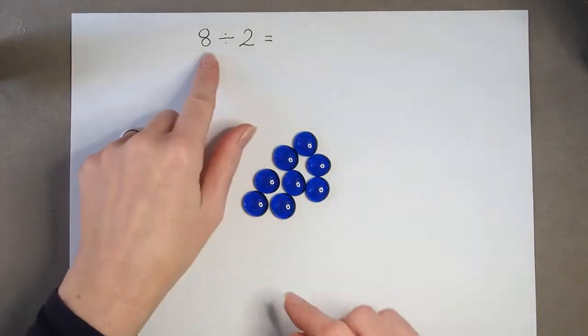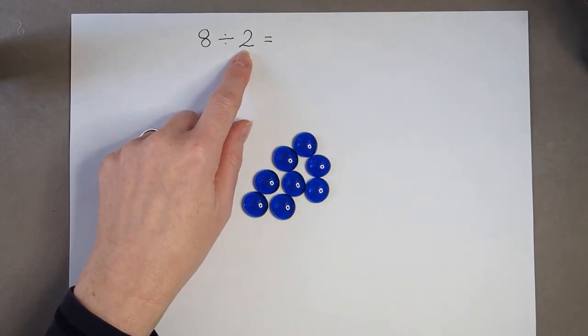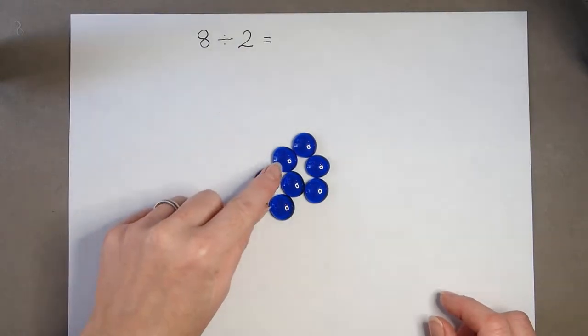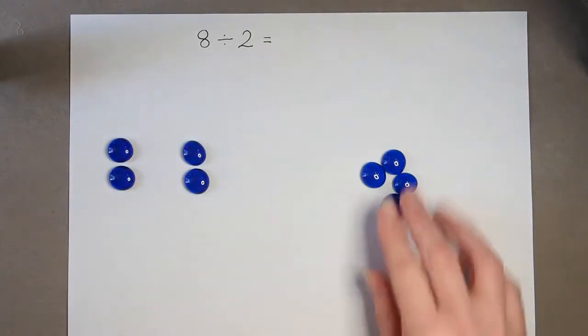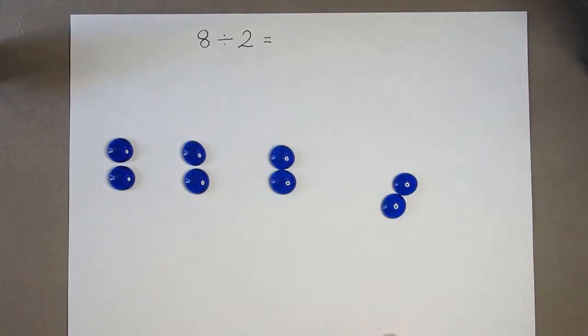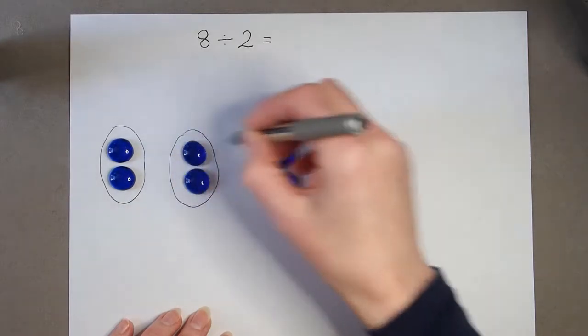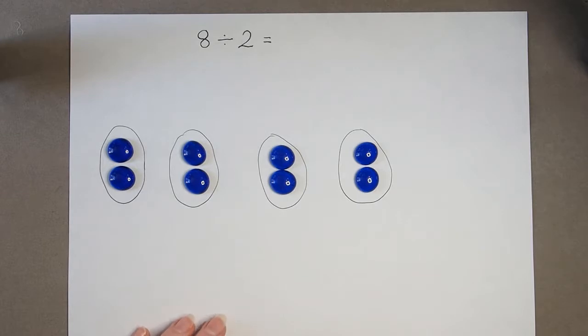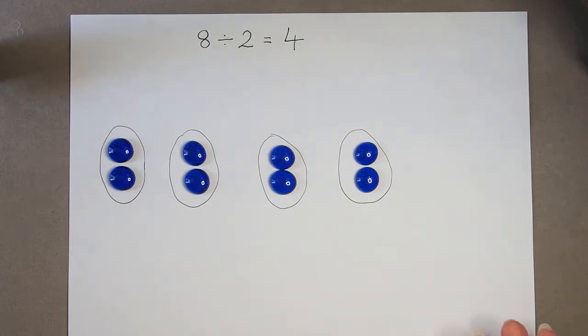Now this time I'm going to put them into groups of 2. So each time I'm going to have 2 in a group. So I'm going to have 2, another 2, another 2, and a final 2. So I can see now I've got 1, 2, 3, 4 groups of 2. So 8 divided by 2 equals 4.